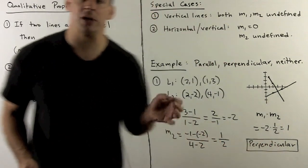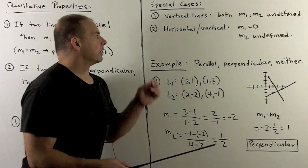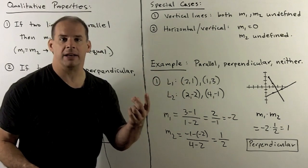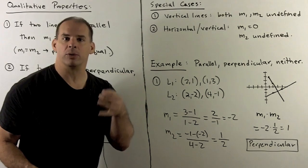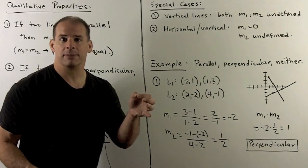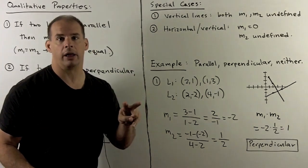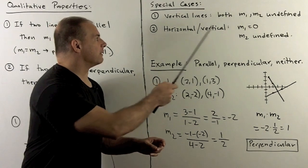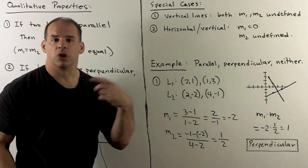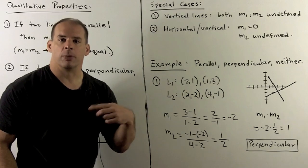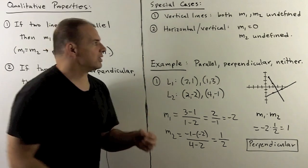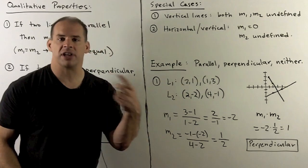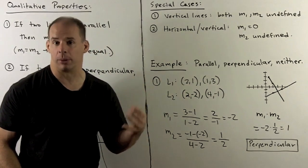Note the special cases: for vertical lines, slopes are undefined. If both slopes are undefined, we have two vertical lines, which are parallel or the same line. If we have one horizontal line and one vertical line, the slope of the horizontal line is 0 and the slope of the vertical line is undefined, so it doesn't make sense to take the product — we have to handle that case separately when checking for perpendicularity.